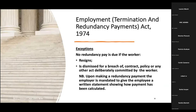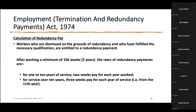Now the calculation of redundancy payment: workers dismissed on grounds of redundancy who have fulfilled the necessary qualification — 104 weeks — are entitled to redundancy payment. The rates are: for one to ten years of service, two weeks' pay for each year worked; over ten years, three weeks' pay for each year of service from the eleventh year onward.